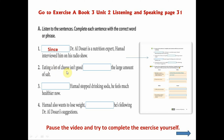Eating a lot of cheese isn't good — the large amount of salt. What could go in here? Looking at the context of the sentence, you can see the large amount of salt is not a good thing and we have isn't good, so we're talking about something negative. Remember what we said to use if it was something negative you wanted to emphasize? Because of. Because of the large amount of salt.